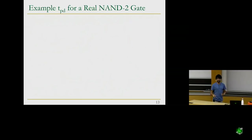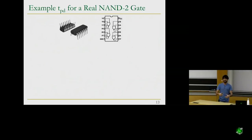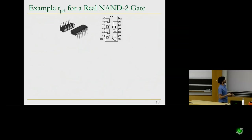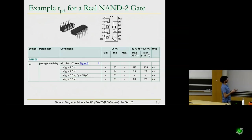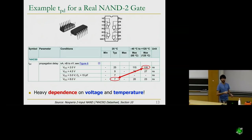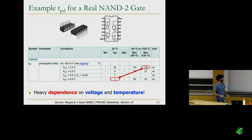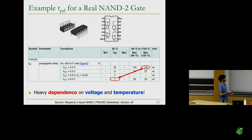For a real-world example, consider a physical circuit with NAND gates. Looking at the data sheet, there's one entry for propagation delay with values in nanoseconds for various voltages and temperatures. The delay can vary from 7 nanoseconds to 135 nanoseconds just by changing environmental conditions — a huge difference. Different combinational paths and other factors also affect propagation and contamination delay, so the variation is significant and important to keep in mind.